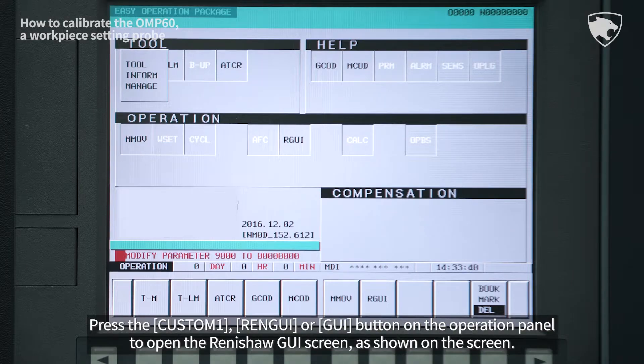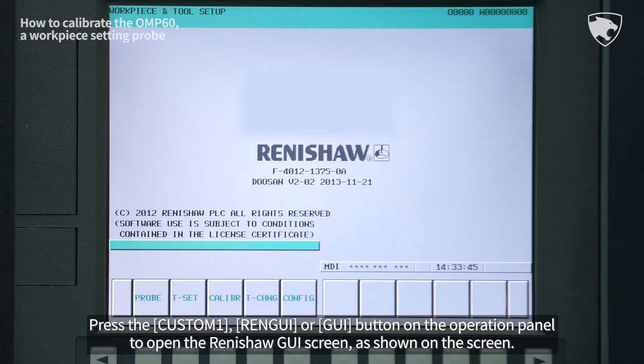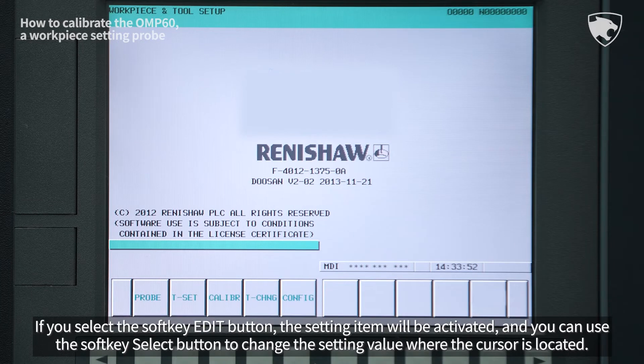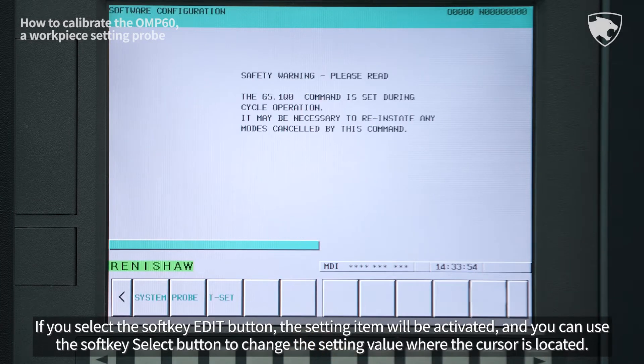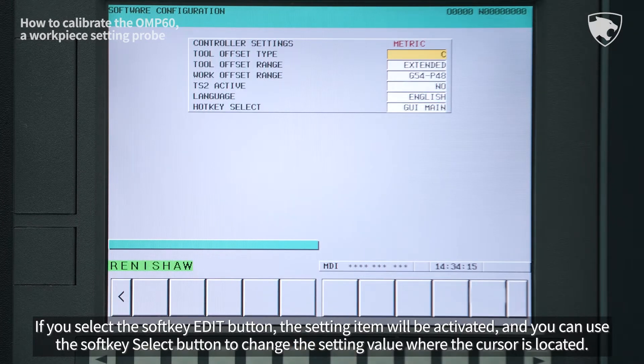Press the Custom 1 REN GUI or GUI button on the operation panel to open the Renishaw GUI screen as shown on the screen. If you select the soft key edit button, the setting item will be activated and you can use the soft key select button to change the setting value where the cursor is located.